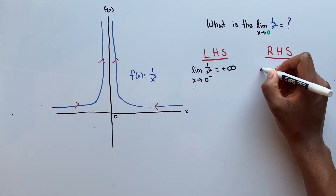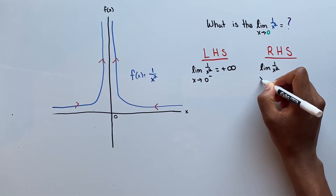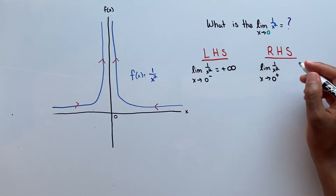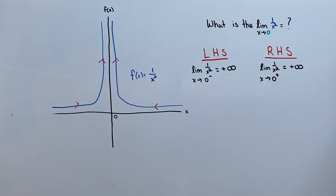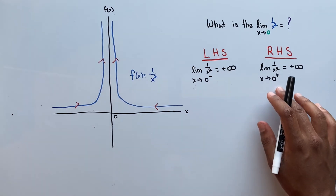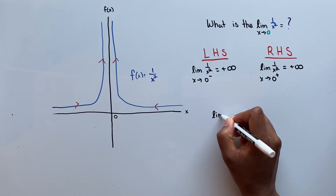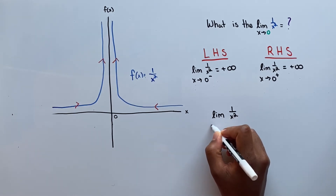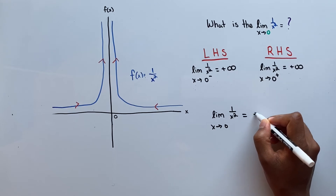And like I said before, if the limit from the left-hand side equals the limit from the right-hand side, which we denote with a positive, equals positive infinity. Since the limit from the left-hand side equals the limit from the right-hand side, we can say that the limit of the function as x approaches 0 equals positive infinity.